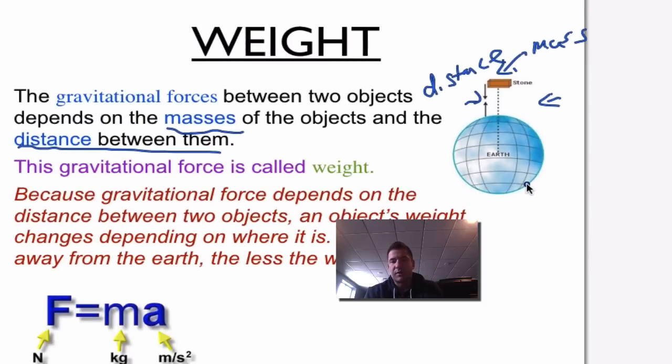That gravitational force, once we determine that, is going to be called weight. This is where it gets confusing, because we typically confuse weight with mass. But because gravitational force depends on the distance between two objects, an object's weight changes depending where it is.